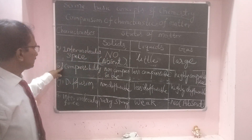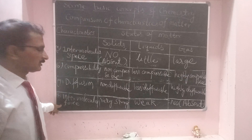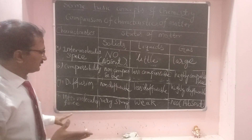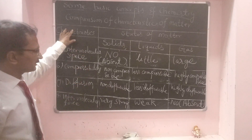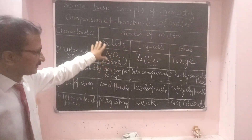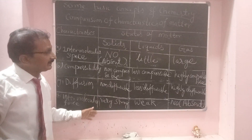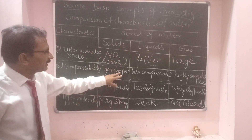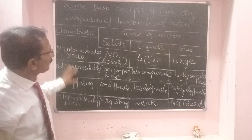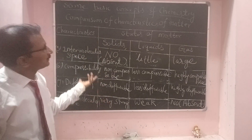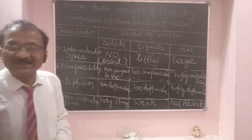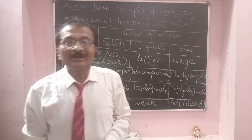So this is how we can compare the characteristic properties of the three states of matter with respect to intermolecular space, compressibility, diffusion, intermolecular force, movement of particles, and kinetic energy. Remember this table in order to understand the characteristics of matter. In the next video, using this, we can discuss the application of the states of matter and how these characteristics play an important role. Let us stop the class and continue in the next class.